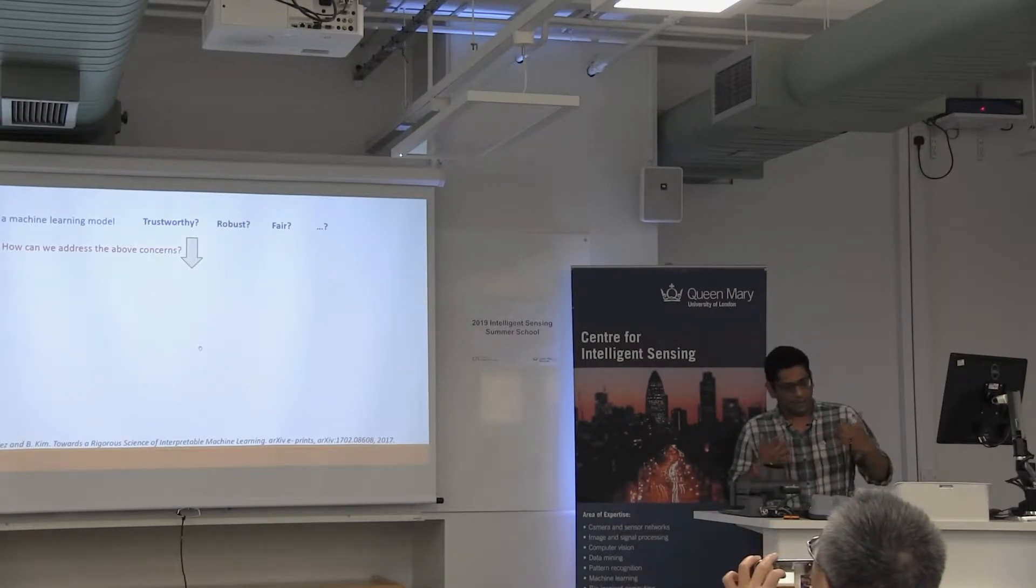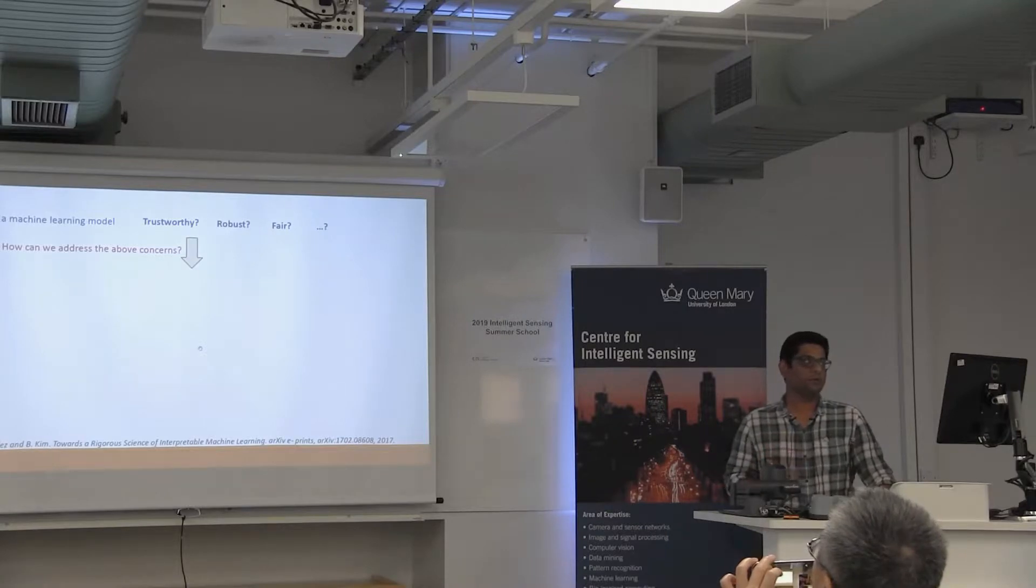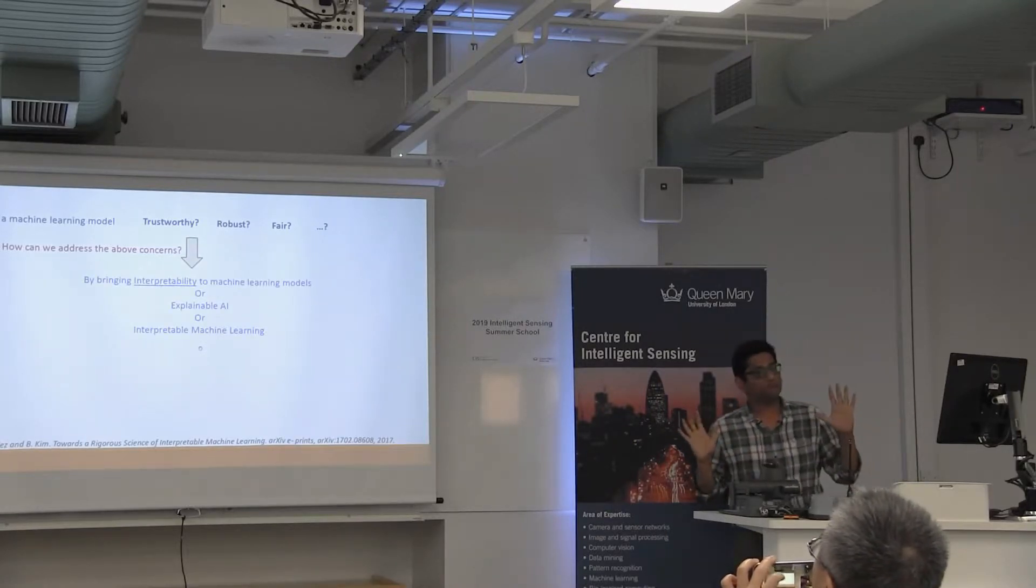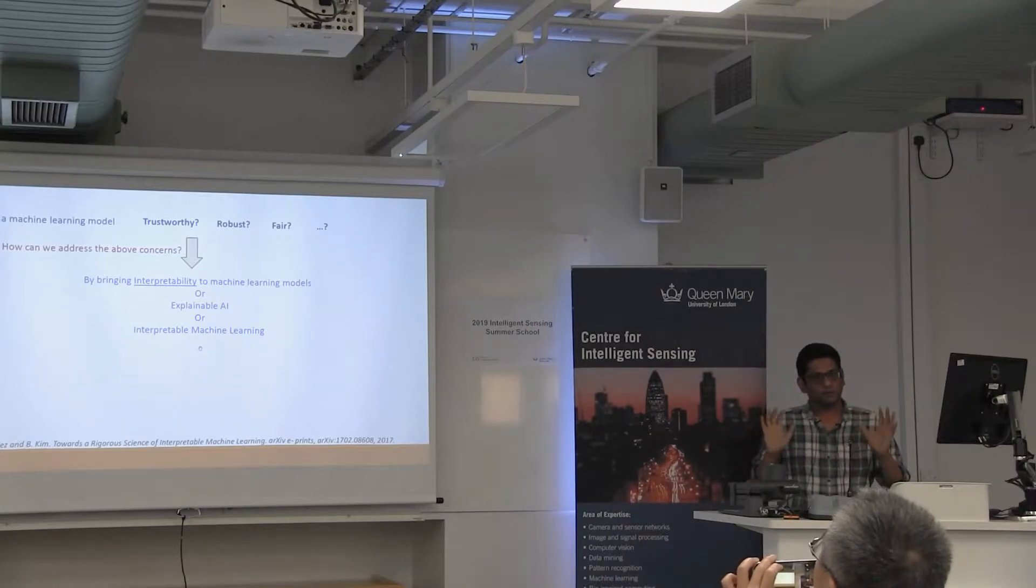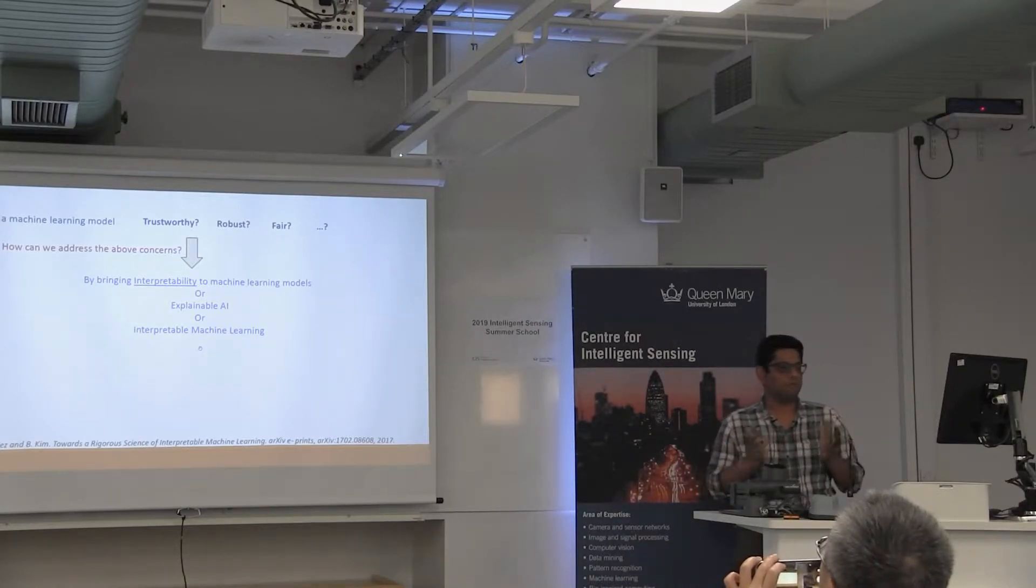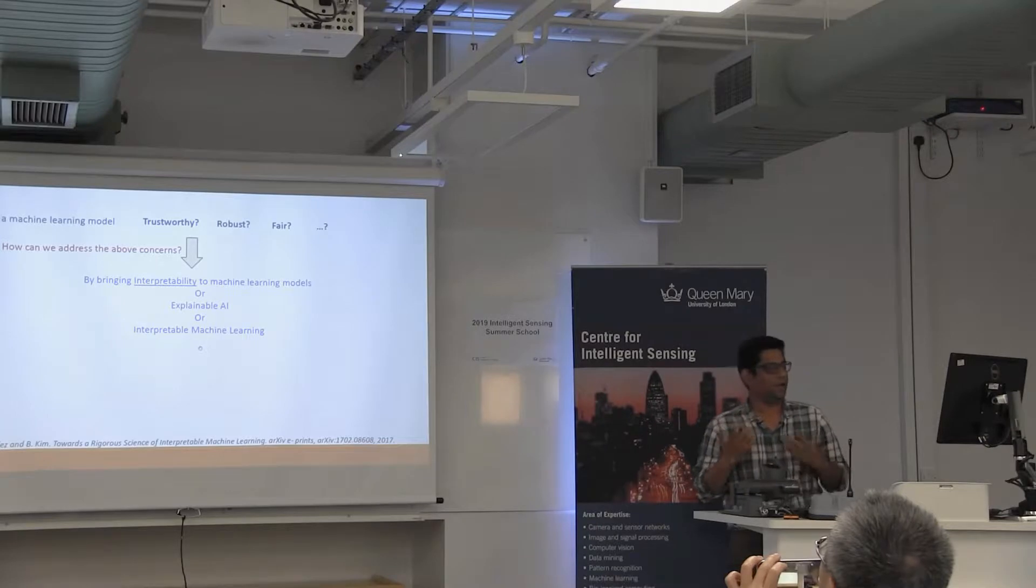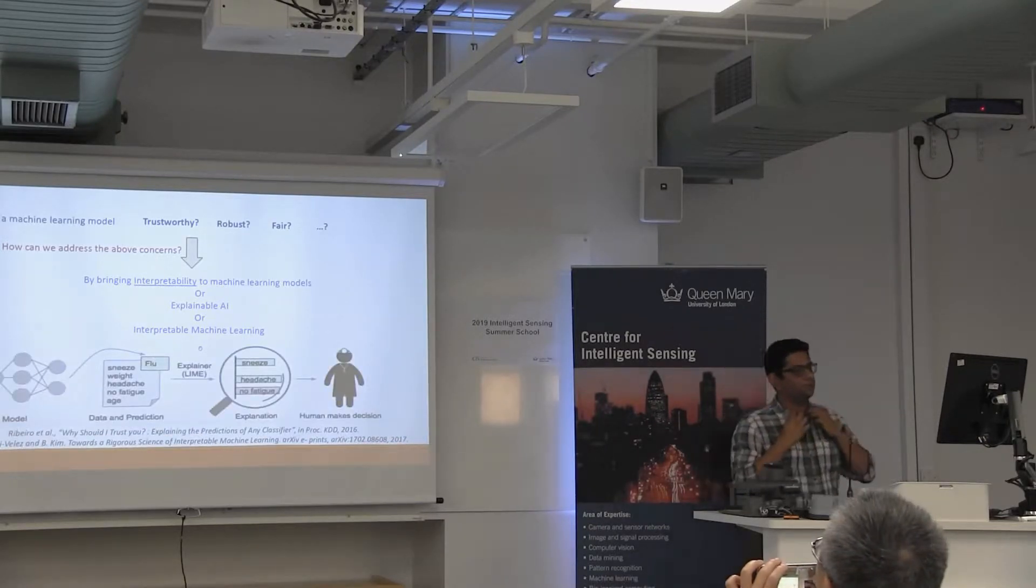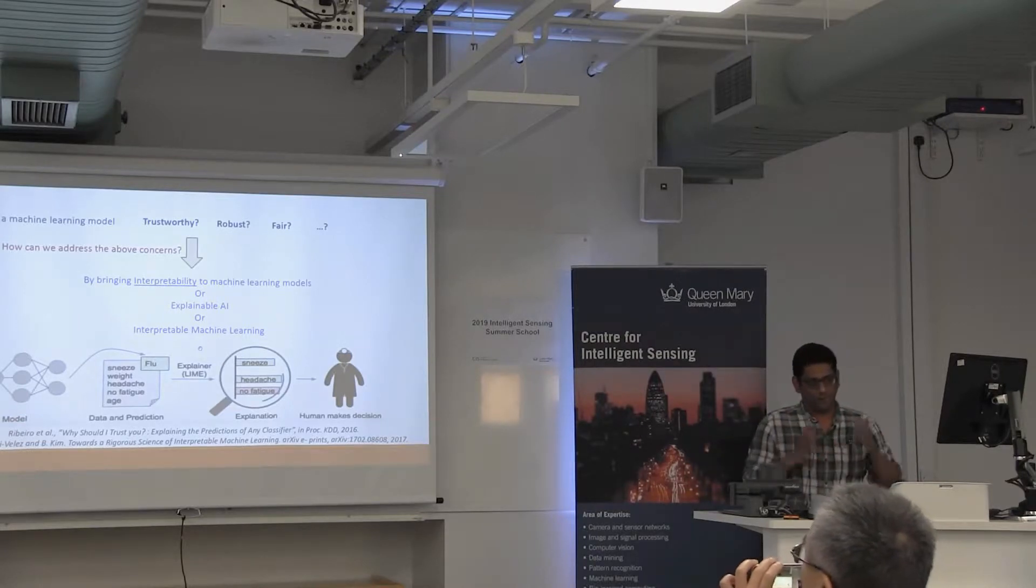We don't know whether our models are fair because datasets are biased and algorithms are biased. I think interpretability can help you tackle some of these questions. It goes by many names - I don't think there's a good reason for whether we call it interpretable AI or explainable AI, but people call it by different names.